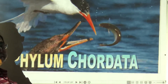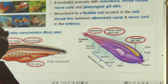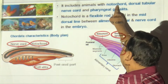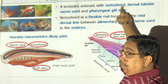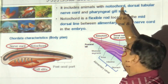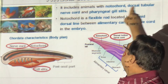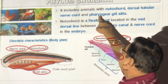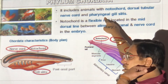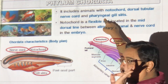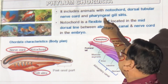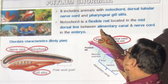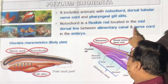We have seen non-chordates in the first half. What are chordates? They have a notochord. They don't have a vertebral column yet — something primitive. There is a dorsal tubular nerve chord — not a spinal chord, but a tubular nerve chord. There are pharyngeal gill slits in the pharynx, at least in some stage of the life cycle. What is notochord? It is a flexible rod in the mid-dorsal line between your alimentary canal and nerve chord.